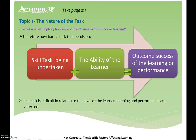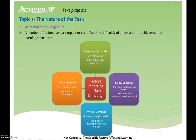An example of how the task can influence performance: a hard task depends on the skill being undertaken plus the ability of the learner, determining the outcome of success. The factors impacting difficulty include cognitive demands, safety concerns, physical demands, and motor demands. If the task doesn't meet a student's physical demands, or if safety concerns exist, there will be a negative impact on performance.